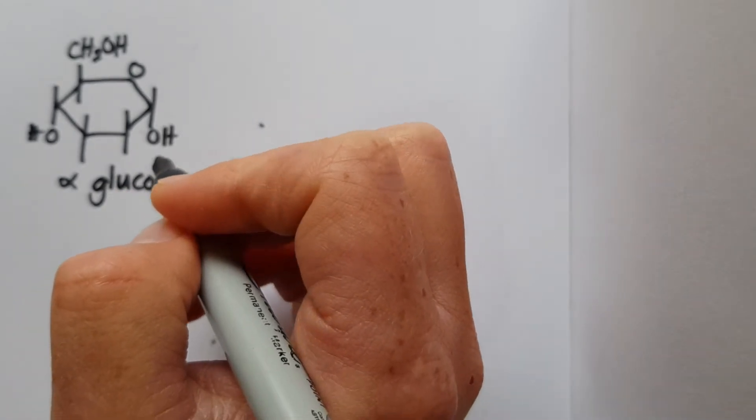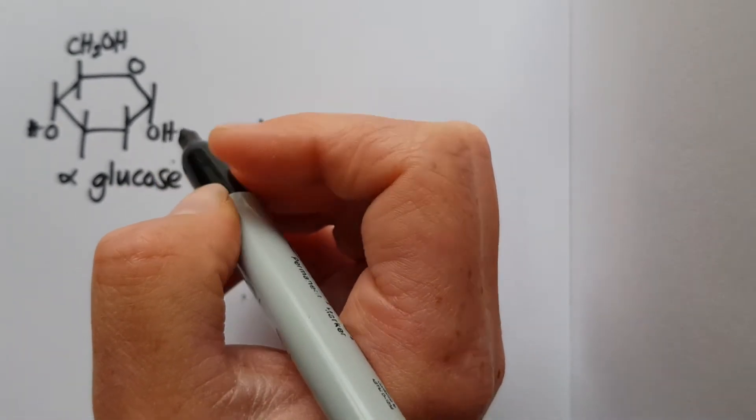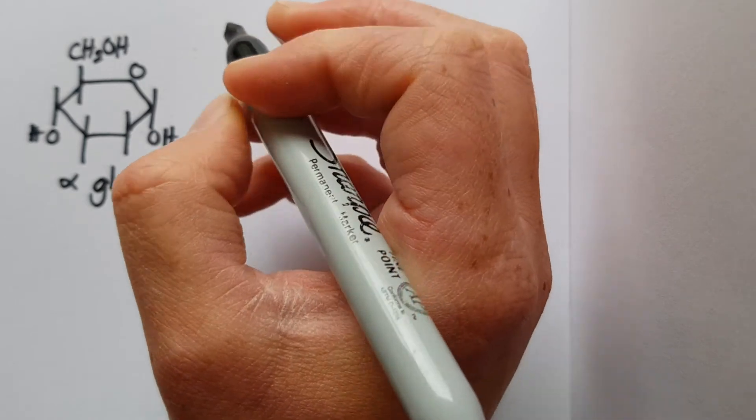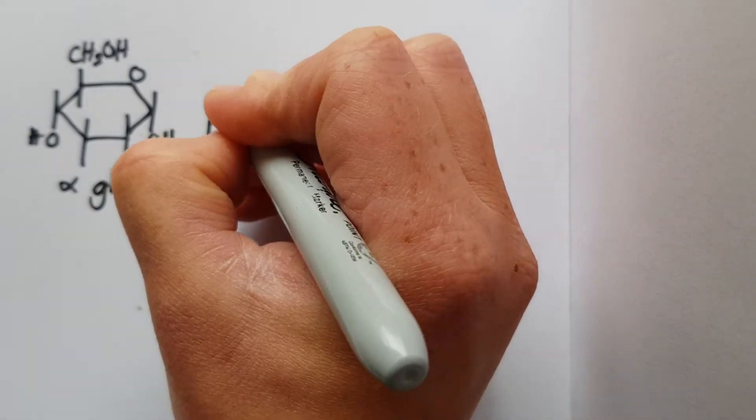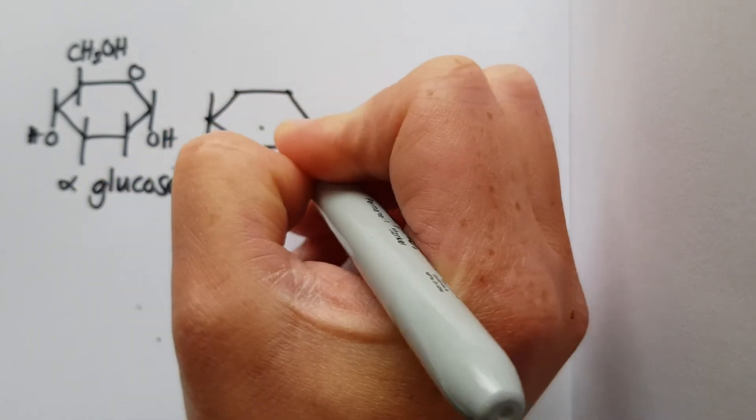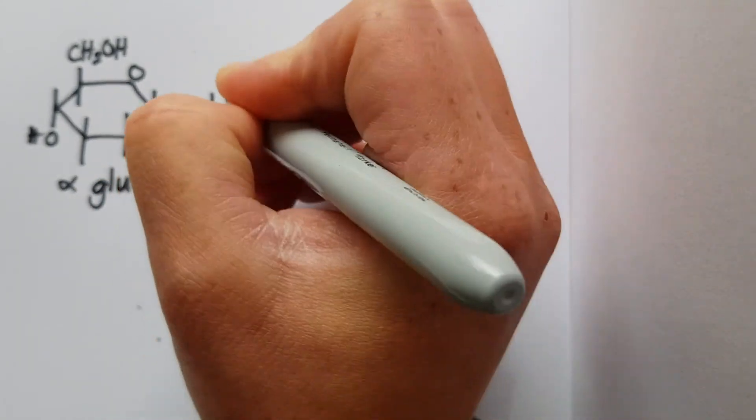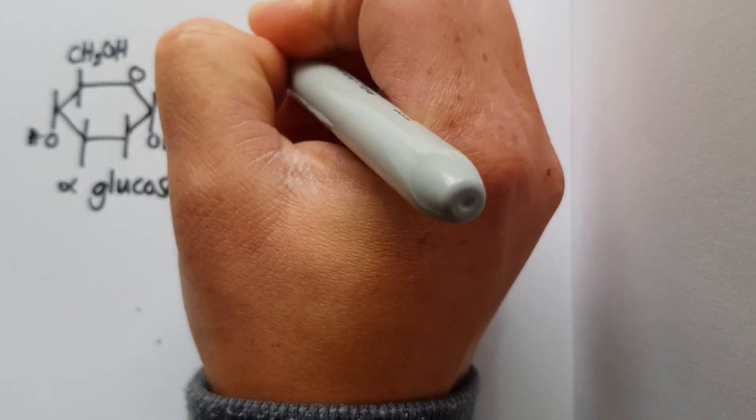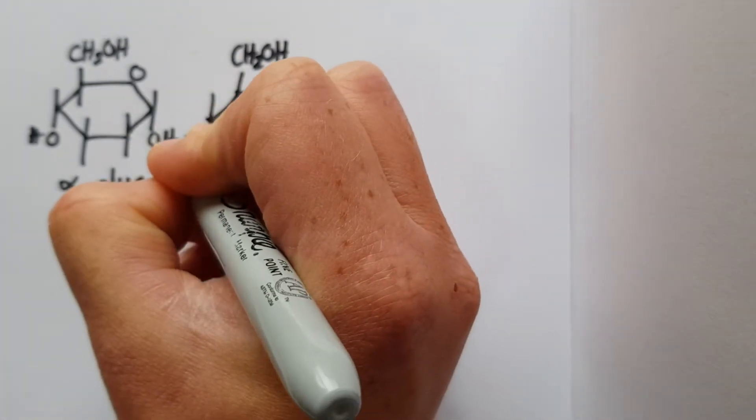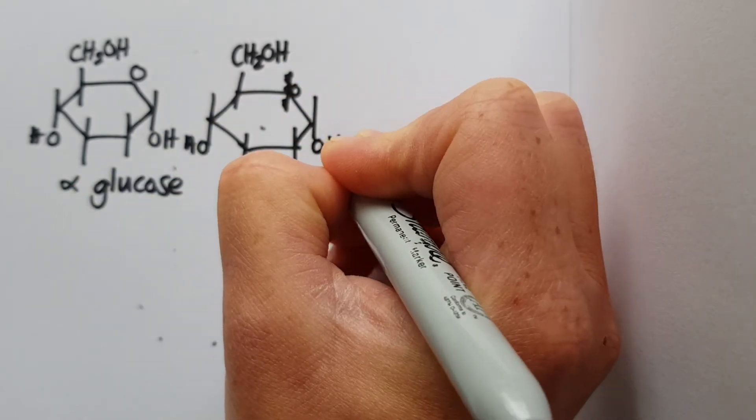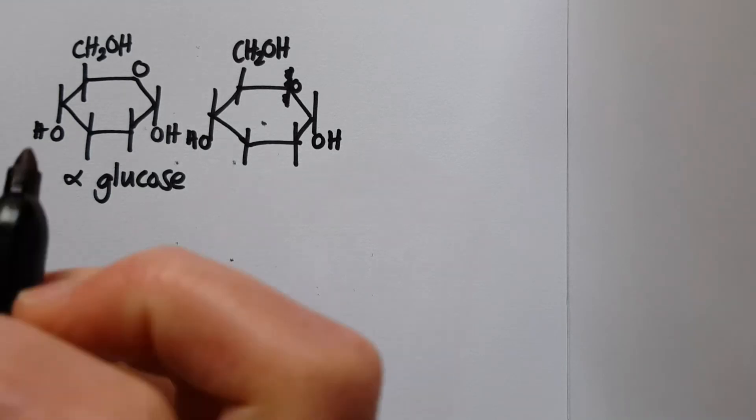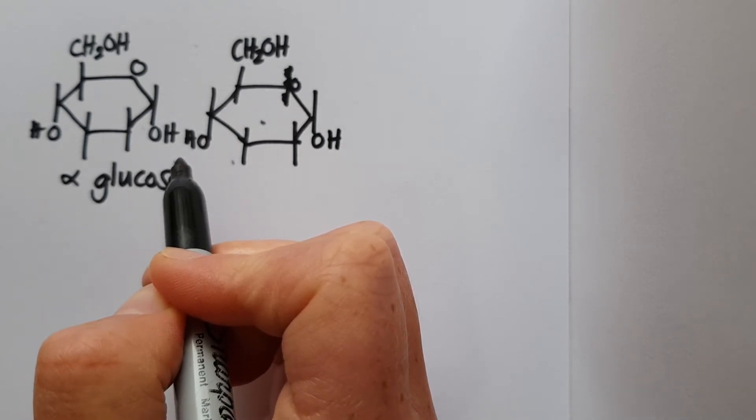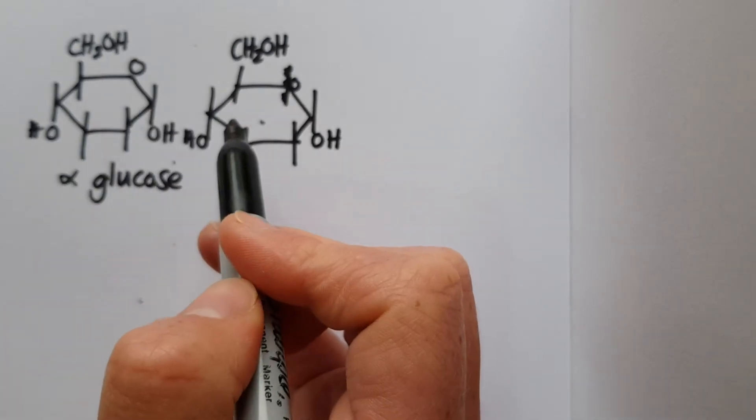To form a disaccharide called maltose, we start by drawing two molecules of alpha glucose adjacent to each other. I'm just going to draw a second molecule of alpha glucose here using the simple form. Because it's alpha glucose, we've got our hydroxyl groups pointing downwards. The reason we do this is to illustrate where exactly the bond forms between these two molecules.